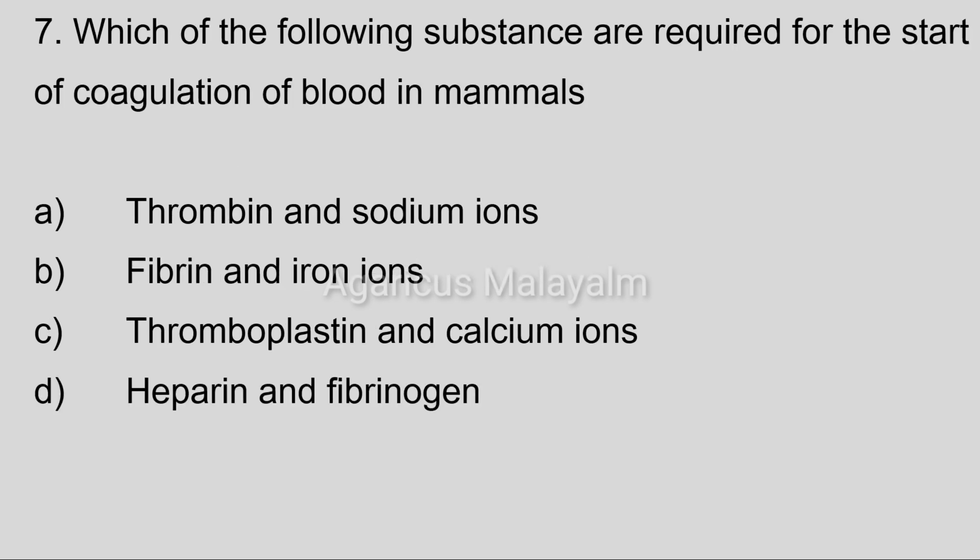Seventh question: which of the following substances are required for the start of coagulation of blood in mammals? Option A: thrombin and sodium ions. Option B: fibrin and iron ions. Option C: thromboplastin and calcium ions. Option D: heparin and fibrinogen.